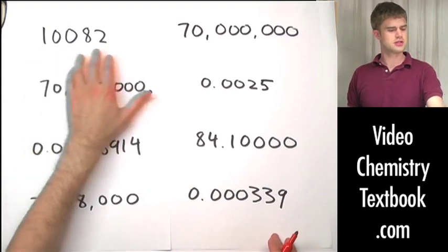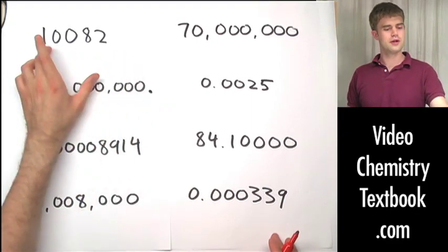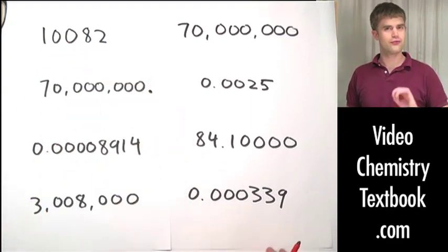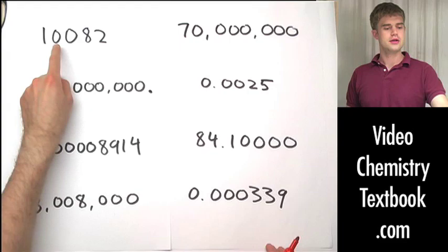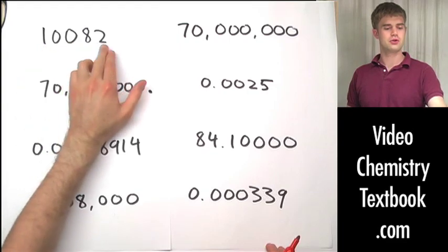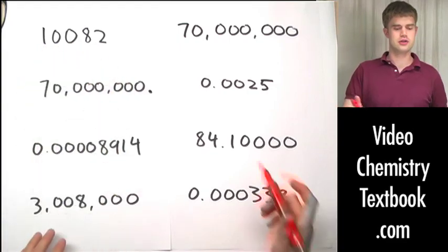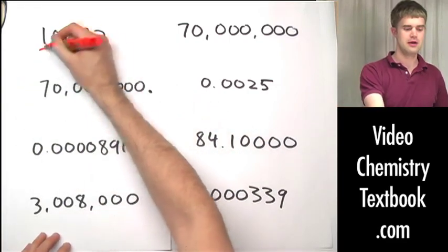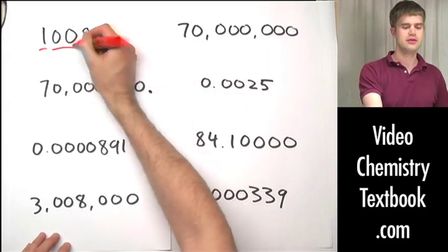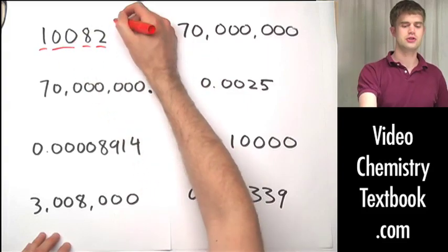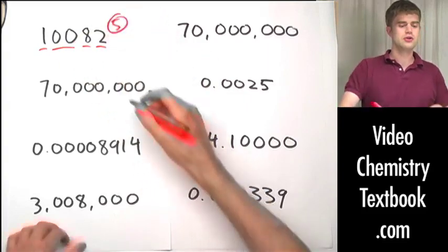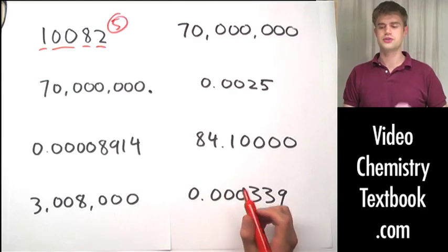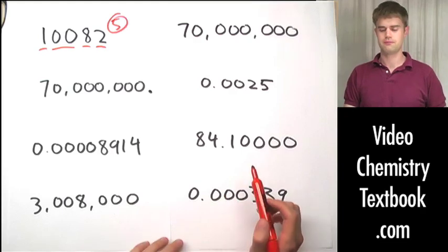Here are some practice problems. Let's start with 10082. Remember our first rule: zeros that are sandwiched between non-zero digits are always significant. These non-zero digits we know are significant, and the zeros are sandwiched between them, so they're all significant. Five total significant figures here.